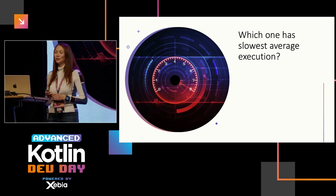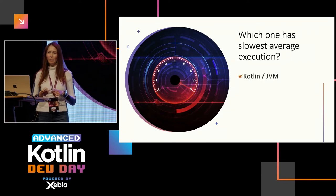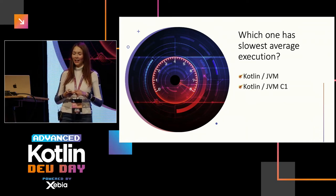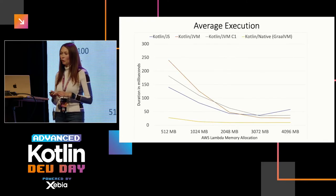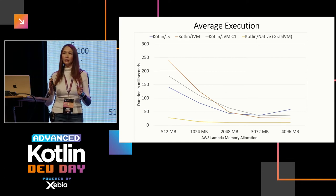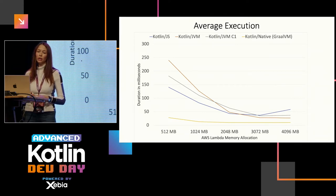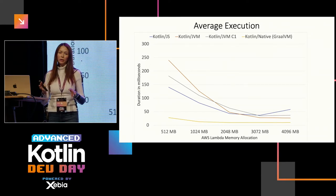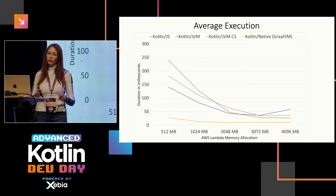Now for average execution time — which one is slowest? The results show that Kotlin Native is also a complete winner on execution. Memory size matters here because increasing memory also increases CPU power — from 3,000 MB you add a CPU, which makes a difference in multi-threading. From production tests at PostNL with large event volumes, JS and JVM C1 start losing to JVM if you run under constant load.